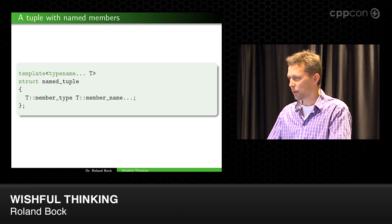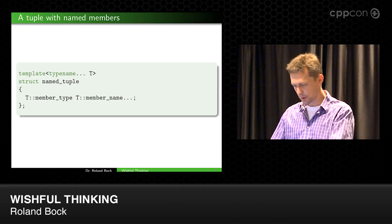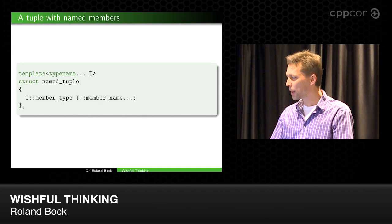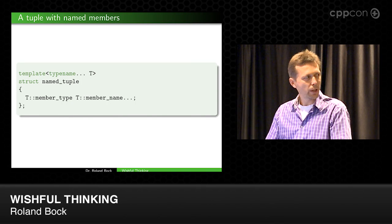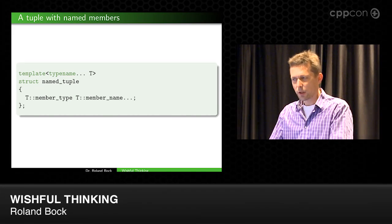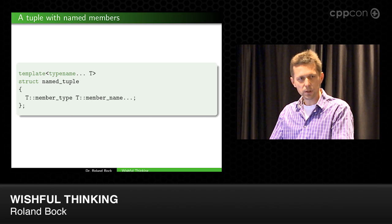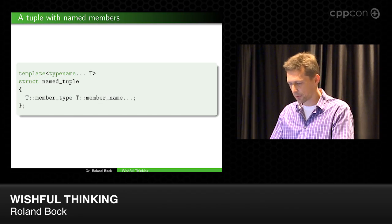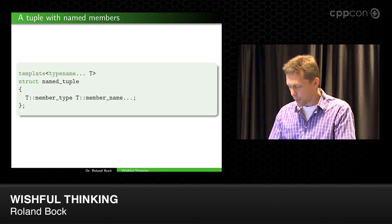In this example, types would have an inner type — this member type — and would have an inner name, which would then be a member name. And then with variadic expansion, you could have a named tuple. And instead of accessing members with an index like you do right now, or with a type as you do it in C++14, you would use member names, like a normal struct.